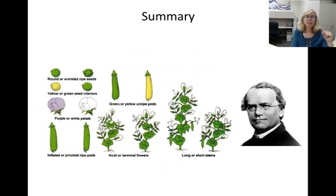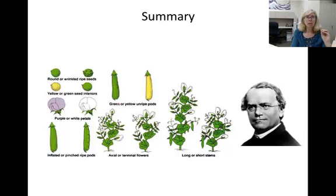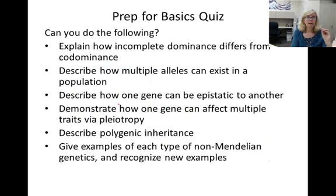To summarize: Mendel got lucky — he picked traits that only showed simple dominance. Actual genetics has proven to be more complex and more interesting than just pea plants. This completes our basics video today. Thanks for watching.